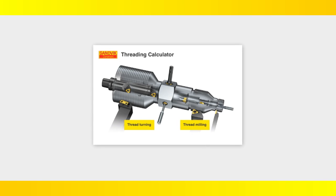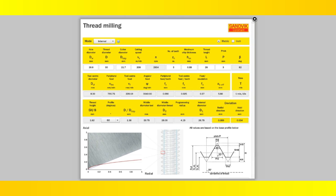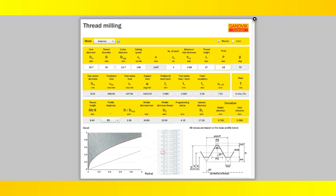A thread milling calculator is available for use from Sandvik Coromant. Simply input the parameters of the thread to be milled, and the calculator will output important information such as peripheral and centerline feed rates, estimated cut time, programming radius, and axial and radial deviation of the thread. This information can be of great value for accurate programming, predicting productivity, and for checking that the dimensional tolerance of the thread will be acceptable.